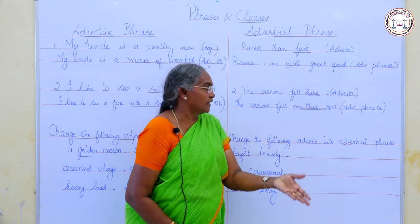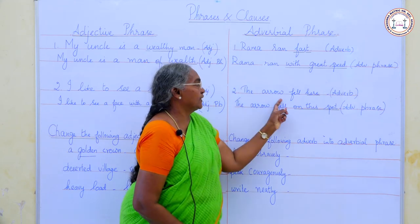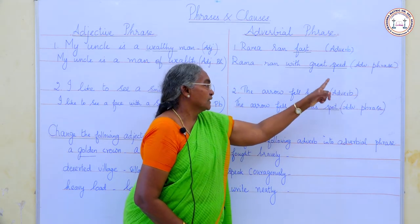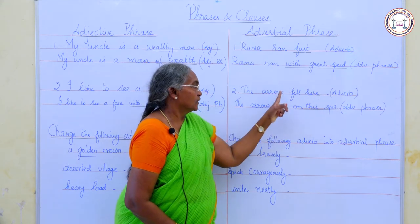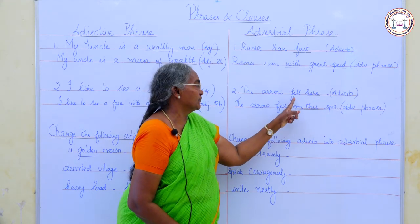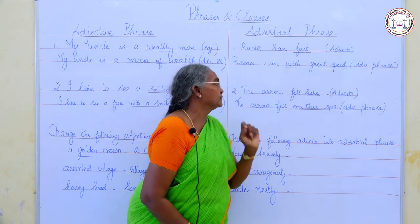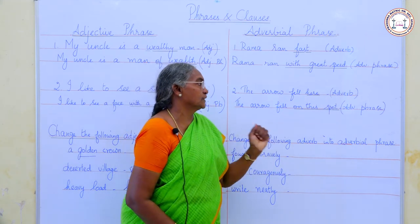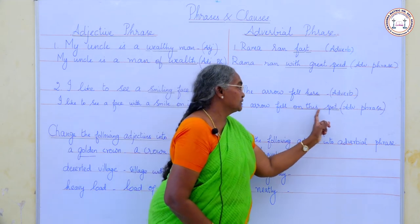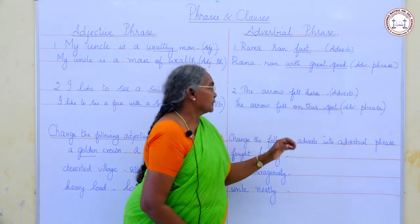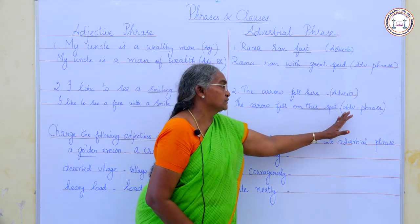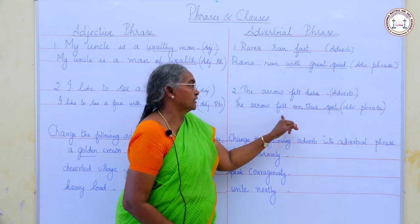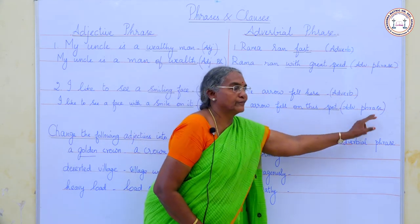Next one: 'The arrow fell here.' 'Here' is the adverb — a single word qualifying the verb 'fell.' Now, 'The arrow fell on this spot.' 'On this spot' is the adverbial phrase — a group of words qualifying the verb 'fell.' So, this is an adverbial phrase.